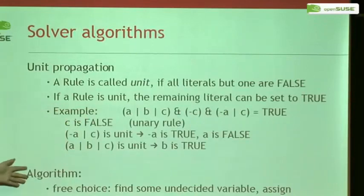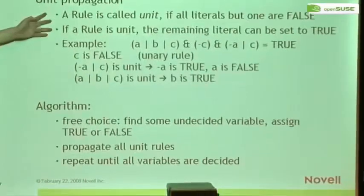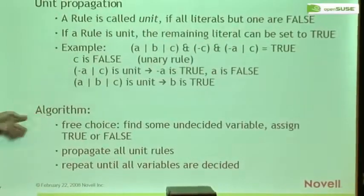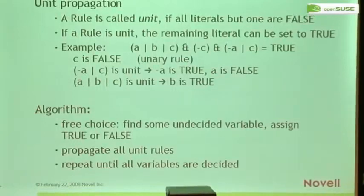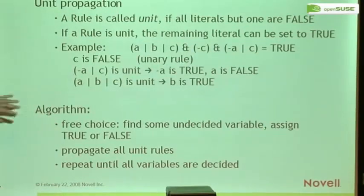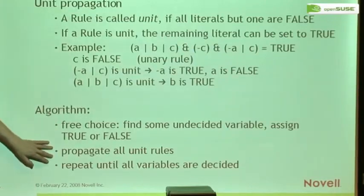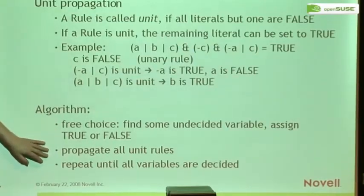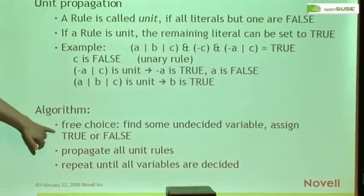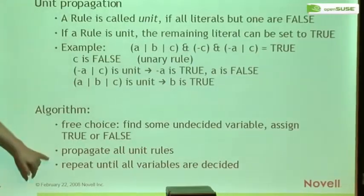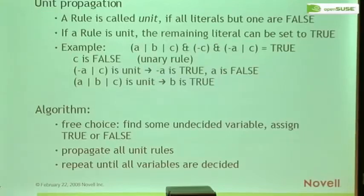The complete solving algorithm works like this: if there's nothing left to propagate, we need a free choice — pick some undecided variable and assign basically a random value. This part is basically heuristics. Then propagate all rules that are now unit. If no rule is unit any longer, continue with the first step. Do this as long as you have unassigned variables, and then you've found a solution.